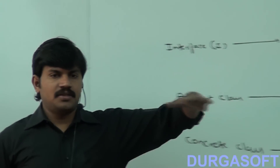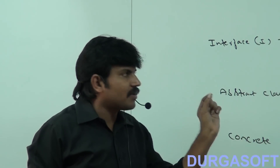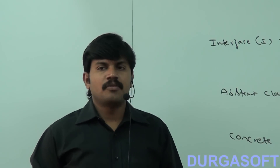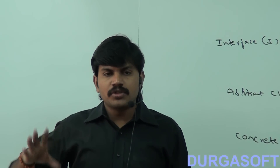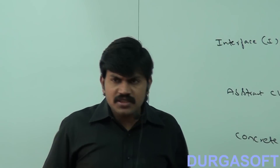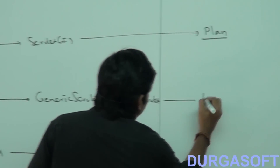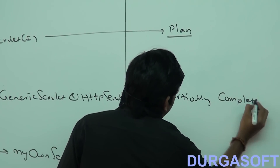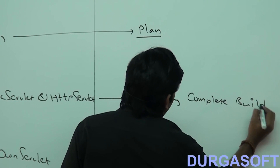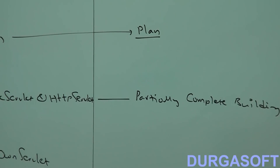The plan is about requirement specification — this is the specification of this building. The plan itself is an interface. Now, based on this plan, we start construction. Suppose a thousand-floor building is our requirement and some 200 floors are completed — just partially completed, not complete. A partially completed building is nothing but an abstract class. We are talking about implementation, but not completely.